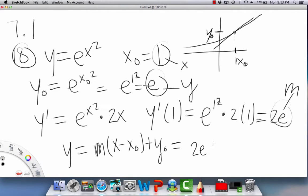So our final equation of the tangent line at this point is going to be 2e that we plug in for m, and then x minus x₀, which is 1, and then plus whatever we got for y, which is e. Okay, and this is our final answer.